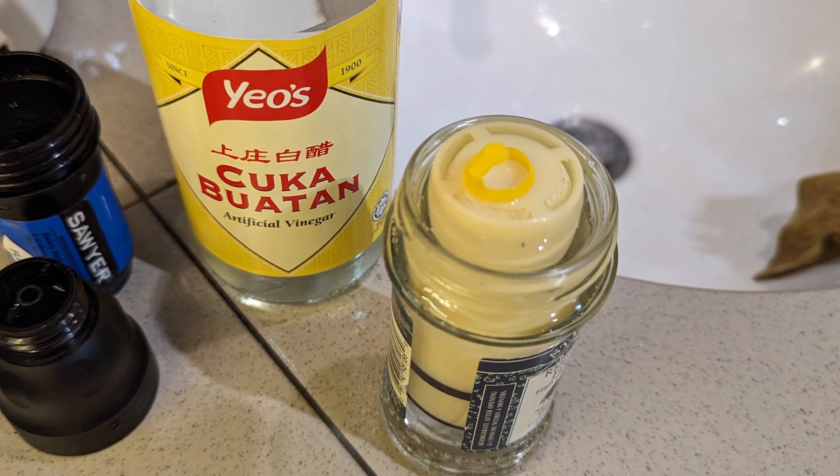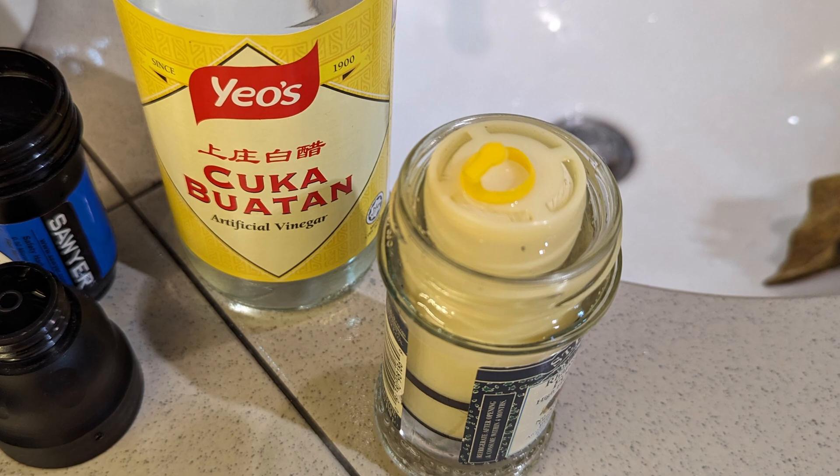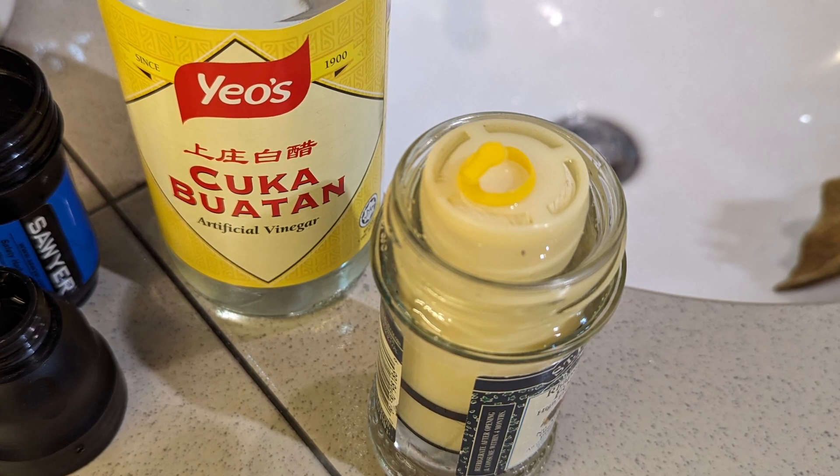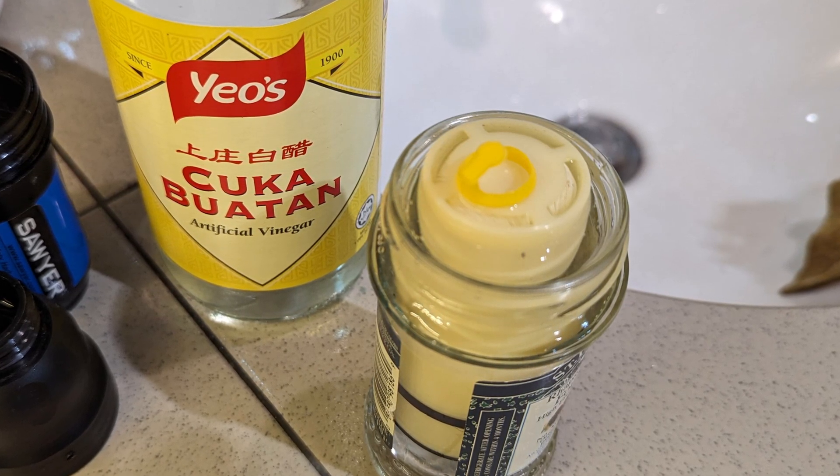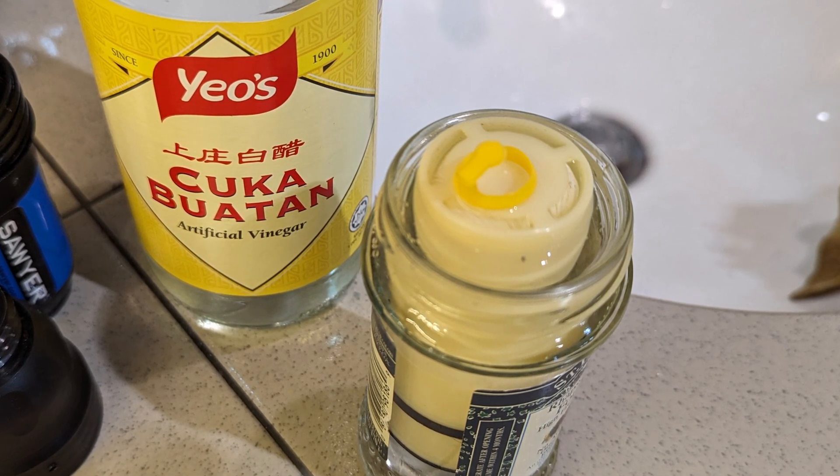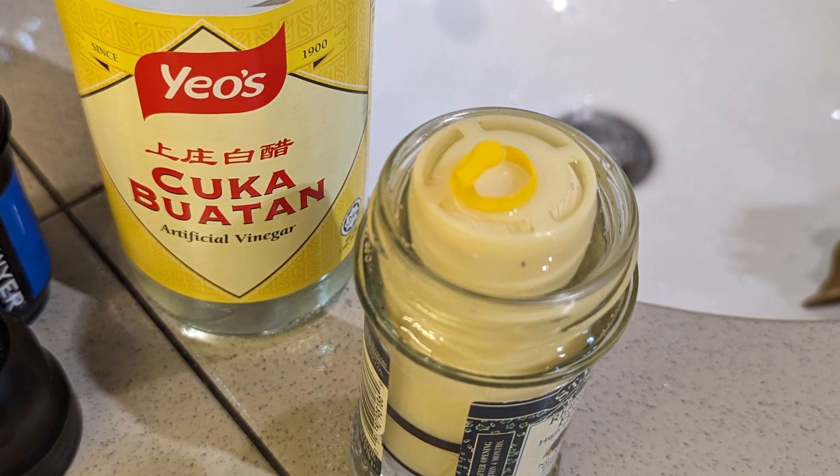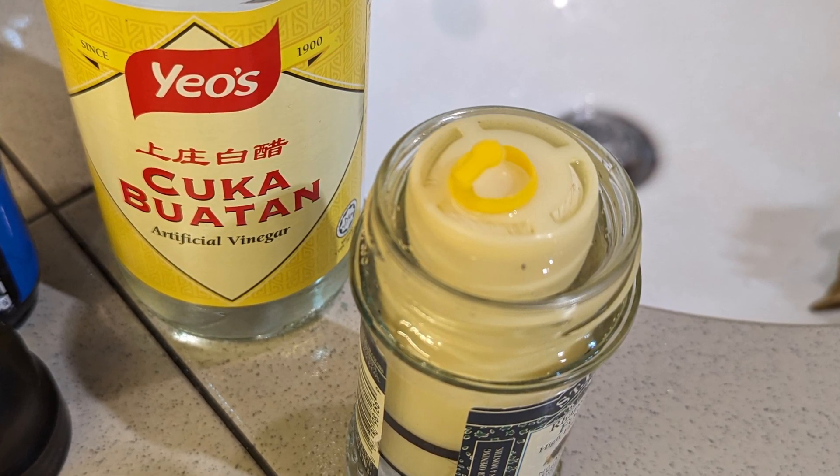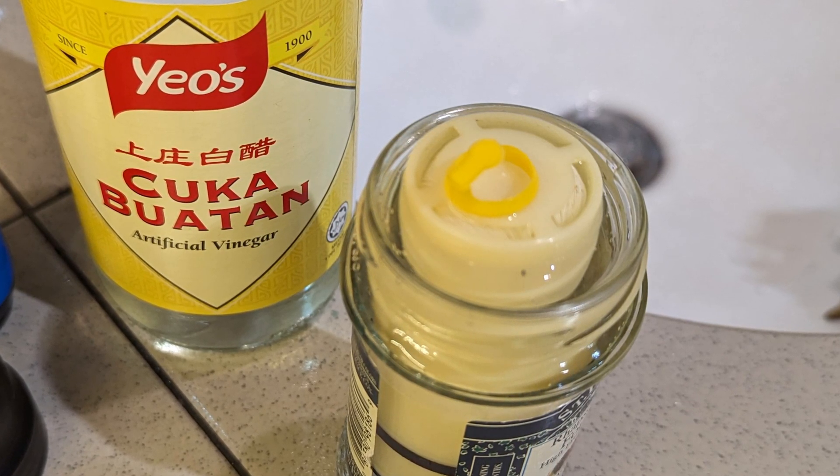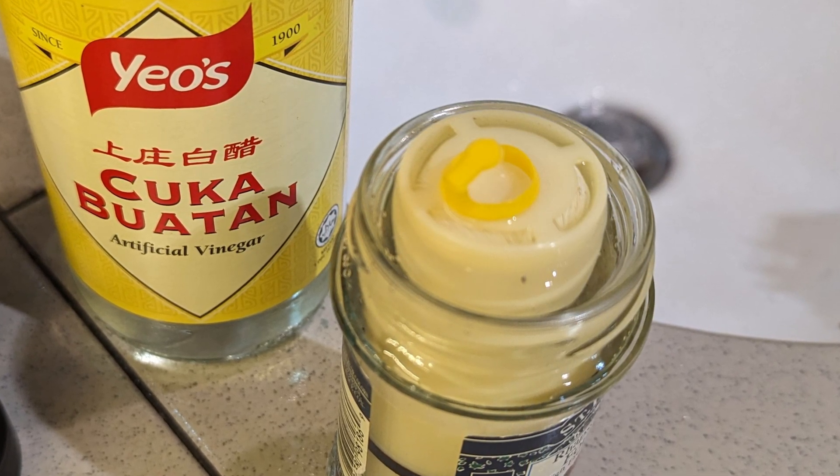I'm using cuka buatan—cuka is vinegar and buatan means artificial. Try not to use the organic stuff because that is not pure acetic acid. There will be other stuff in there, sometimes there's even particles in the unfiltered or organic natural vinegars. Since you're trying to de-clog a filter which has very small pores, ideally you want the cleanest fluid, just pure acid and water to flush or soak it with. So get the artificial vinegar from the store—it's dirt cheap—and use that white vinegar.